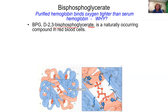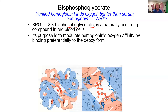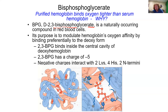BPG has two phosphate groups on carbons 2 and 3. Its purpose is to modulate hemoglobin's oxygen affinity by preferentially binding to the deoxy form. BPG inserts itself into the central cavity where hemoglobin's subunits come together — the cavity that is open in the T-state but blocked in the R-state. It has an overall negative five charge, which interacts with two lysines, four histidines, and two N-termini.